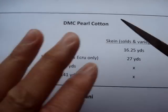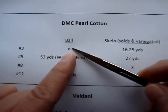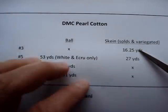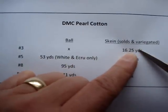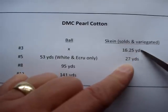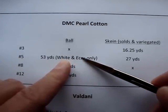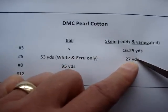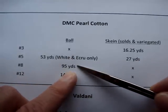Here's a little cheat sheet I made. The number three pearl cotton comes in skeins — the Nordic Needle website has a full listing — there are 16.25 yards in a skein. The number five pearl cotton still comes in a ball in white and ecru, and that's 53 yards; however, any other solid or variegated colors come in a skein at 27 yards.